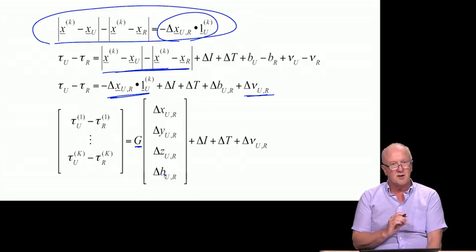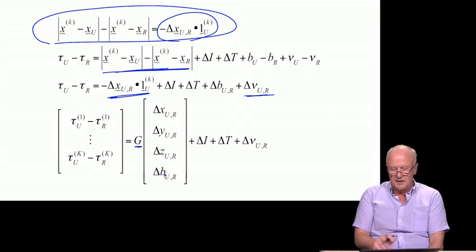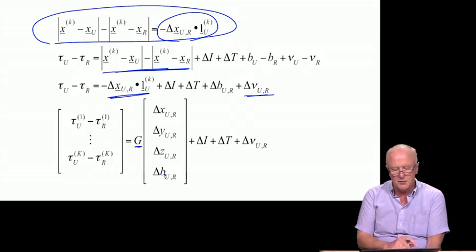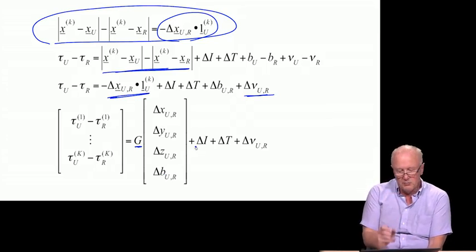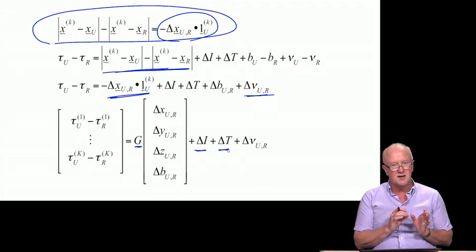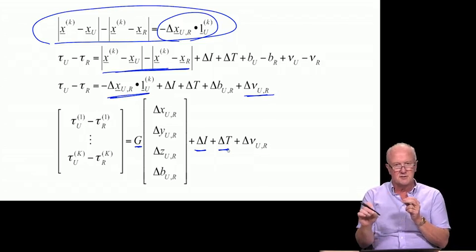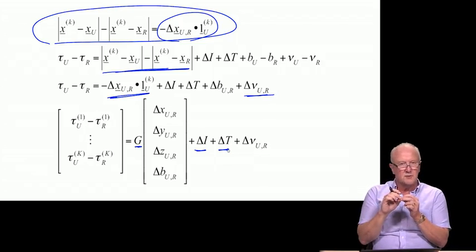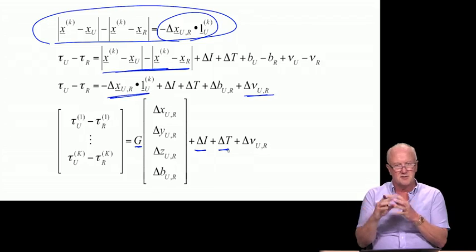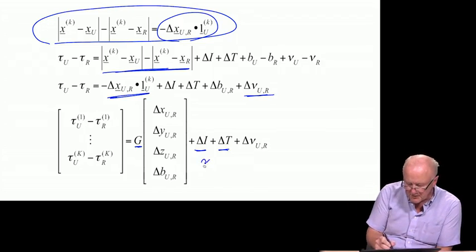Which we have to be a little bit aware of because that means when we solve for this set of equations, our answers are all going to be user location relative to the reference. And here we have delta i, delta t, and delta nu. Our earnest hope is that the reference receiver and the user receiver are close enough to each other that those deltas are small. That the ray going from the satellite to the user is more or less going through the same iono and the same tropo as the ray from the satellite to the reference. So that just cancels. We're hoping that these are approximately zero.